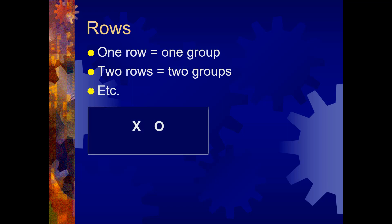The other thing to understand about these notations involves the rows of letters. Any row, one row, equals one group of people. If you have two rows of letters, then you know that there are two groups, etc. So here's what a design might look like.